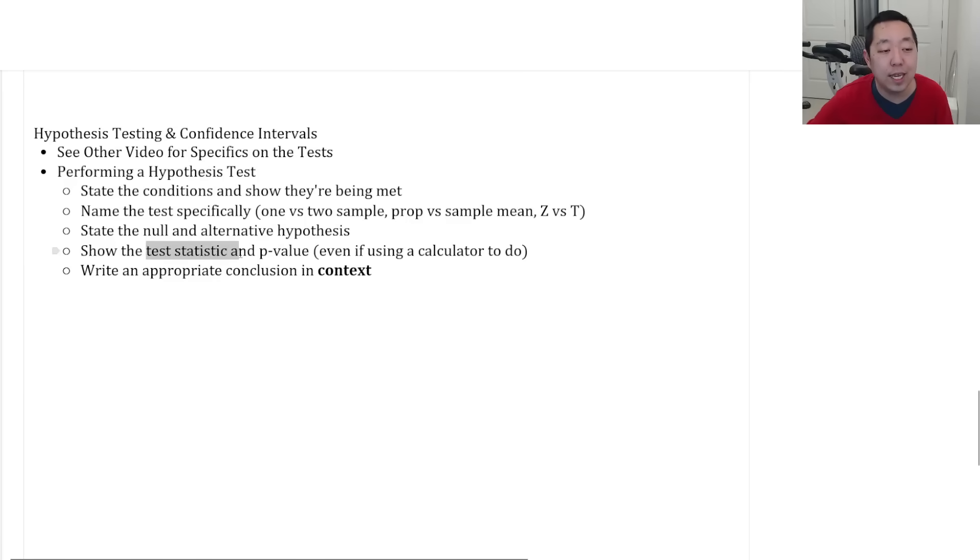Make sure you state the null and alternative hypothesis. Show both the test statistic and the p-value, even when you're using a calculator. I know your conclusion is just based on the p-value, but show the test statistic as well as the p-value, and then write an appropriate conclusion in context.